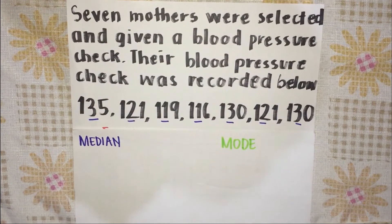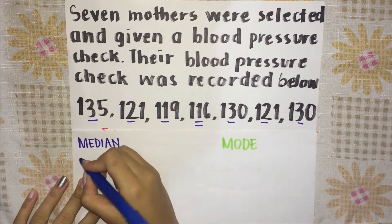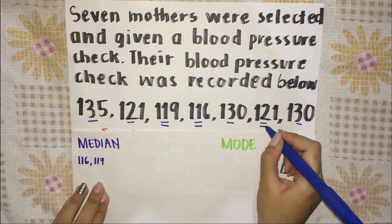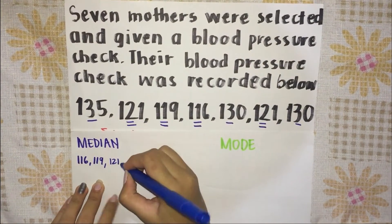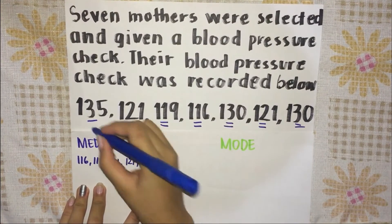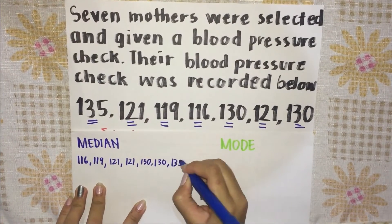To find the median, arrange all the data in ascending order. The order would be as follows: 116, 119, 121, 121, 130, 130, and 135.